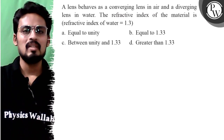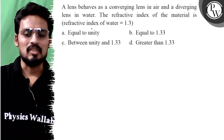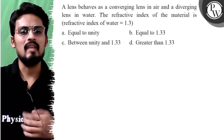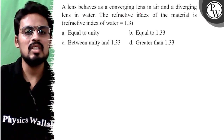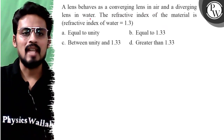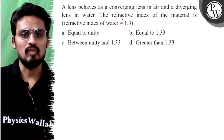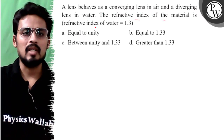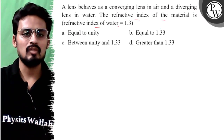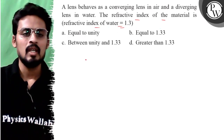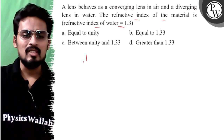Let's see this question: a lens behaves as a converging lens in air and a diverging lens in water. The refractive index of the material is given, and the refractive index of water is given as 1.3.